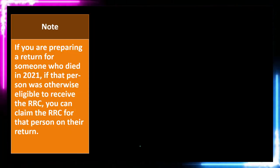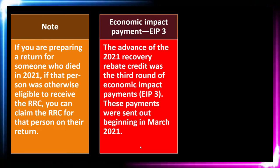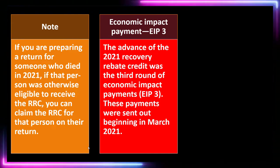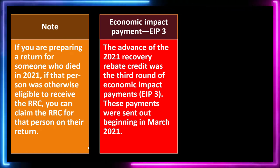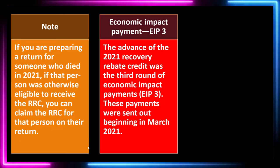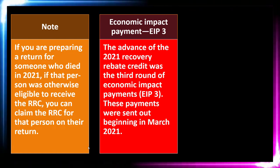If you are preparing a return for someone who died in 2021, and that person was otherwise eligible to receive the recovery rebate credit, you can claim the RRC for that person on their return. EIP3 — the third economic impact payment, stimulus payment 3 — is applied to 2021 as a prepayment of the 2021 recovery rebate credit, remedied if there was a problem, on the 2021 tax return filed generally by April 15th or April 18th of 2022.